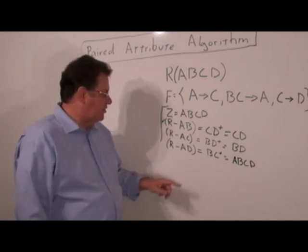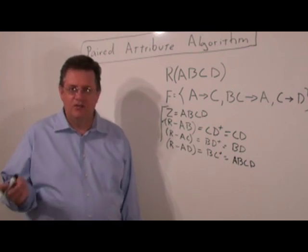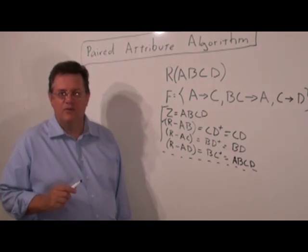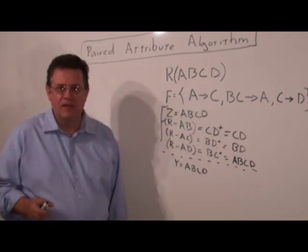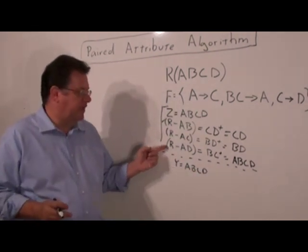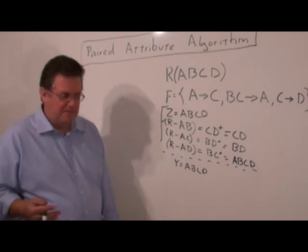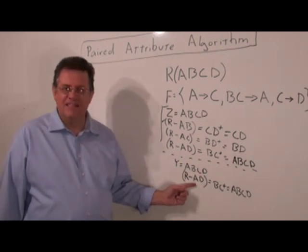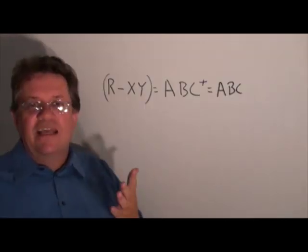Now, what we would do, we would call the decompose routine. First of all, we create a variable Y, which gets all the attributes of Z. And then we do R minus AD. We're going to have BC closure, get ABCD again. Since this closure contained both the A and the D, we can get rid of either the A or the D.